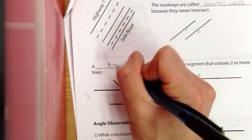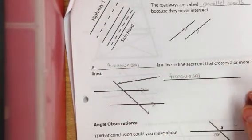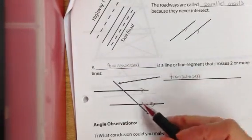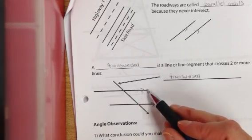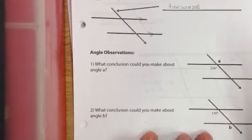So, a transversal is a line or line segment that crosses two or more lines or parallel roads, and in this case, we'll think about them like a highway. And we're going to use that idea to just go over some of the angles that we talked about in the notes.